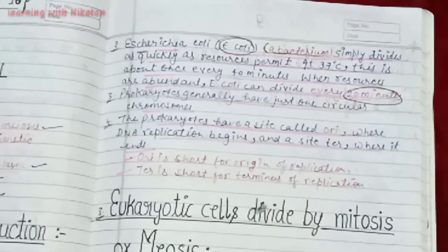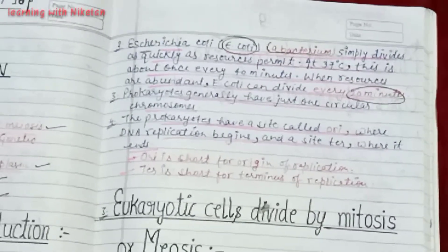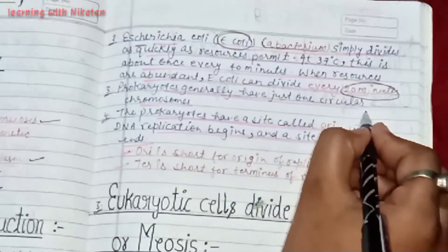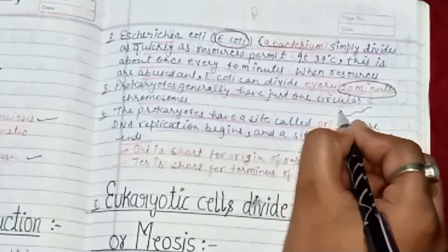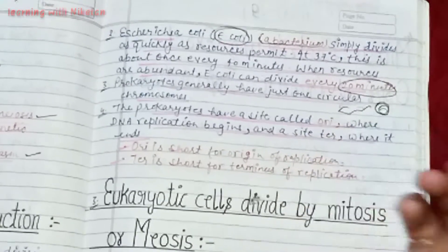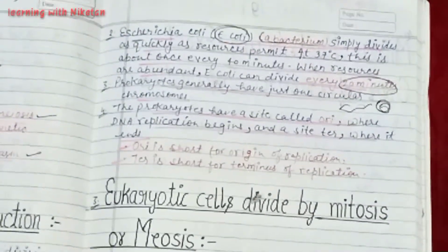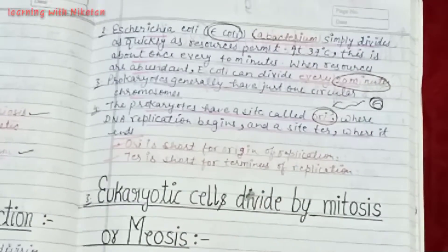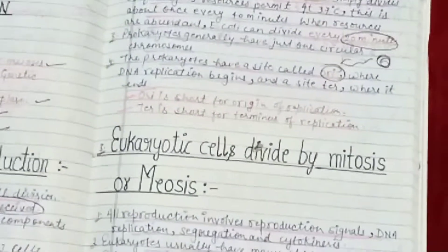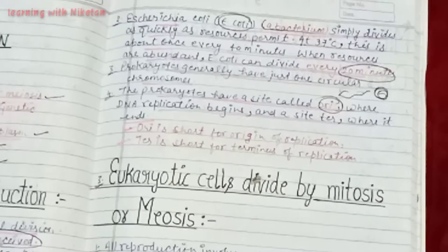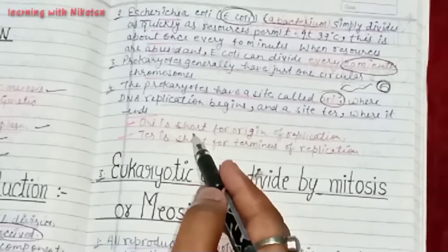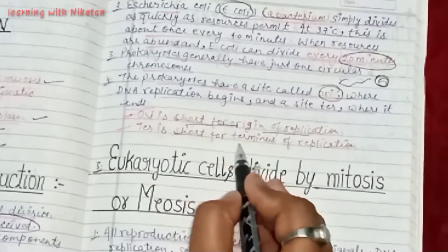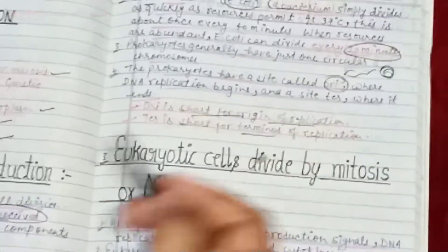Prokaryotes generally have just one circular chromosome. The prokaryotes have a site called ori where DNA replication begins, and the site ter where it ends. Ori is short for origin of replication; ter is short for terminus of replication.